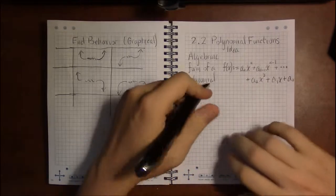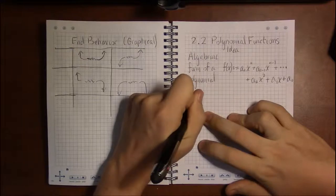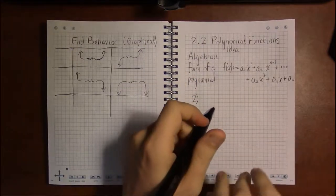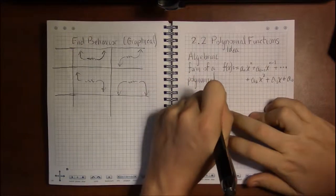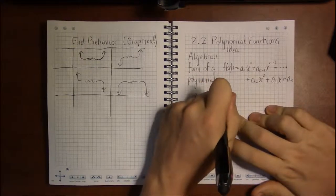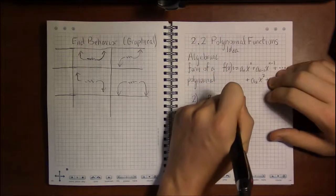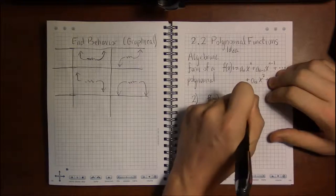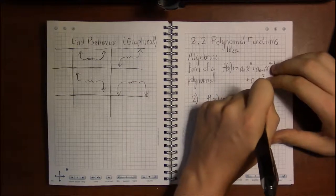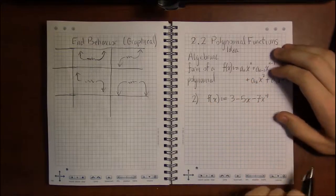For example, on exercise 2 of this section, we're given the following polynomial: f(x) is defined to be 3 - 5x - 7x⁴. This isn't written in standard form.